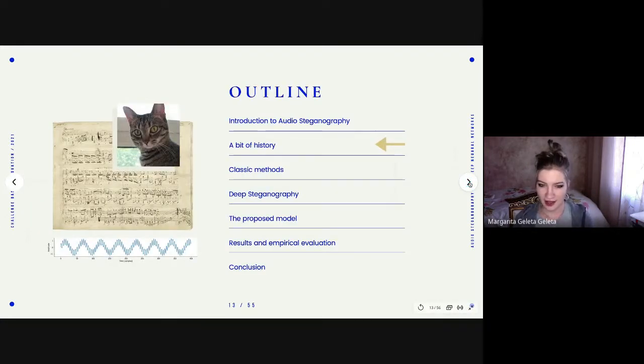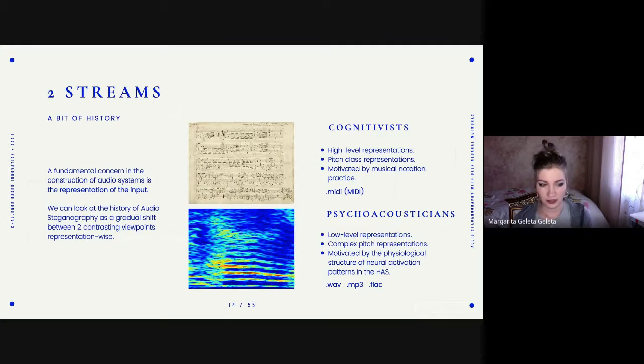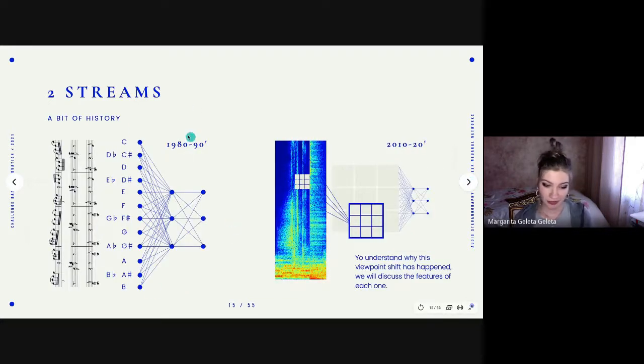It is interesting to see the history of audio steganography as a division of how audio representation was done through history. We can see two streams: the cognitivist, which relied on high-level representations of audio, which is basically music notation symbols; and the psychoacousticians, which focus on low-level representations, the spectral representation of audio. At the beginning, we had connectionist approaches, the most famous are the neural networks, that got as input symbolic information and then yielded some output.